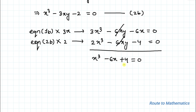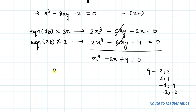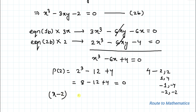We now have a cubic equation. To factorize it, let's find factors of the constant term 4. The factors of 4 are ±1, ±2, ±4. Using the factor theorem, let's test p(2): 2³ - 6(2) + 4 = 8 - 12 + 4 = 0. So by the factor theorem, (x - 2) is one of the factors of this cubic equation.